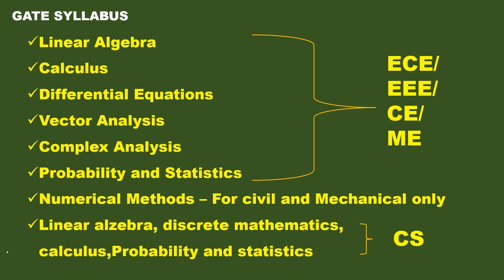These topics are common for ECE, EEE, civil, and mechanical branches. Civil and mechanical branches kii extra ava one chapter irukku — numerical methods. Computer science branch kii only linear algebra, calculus, probability and statistics irukkum. Extra ava discrete mathematics chapter irukku.